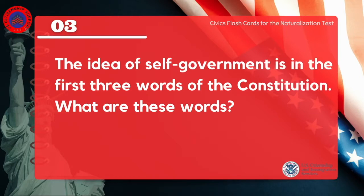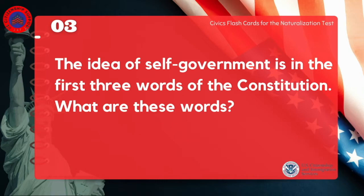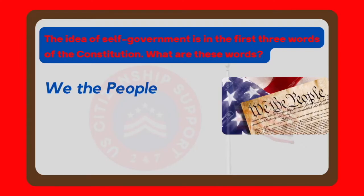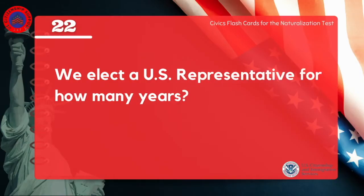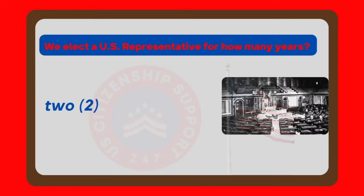The idea of self-government is in the first three words of the Constitution. What are these words? We the people. We elect a U.S. representative for how many years? Two.